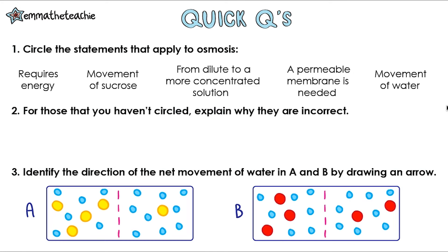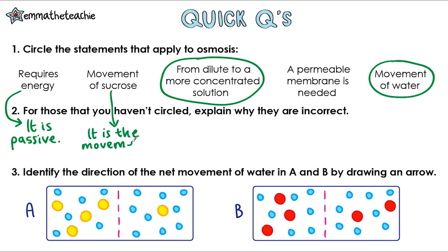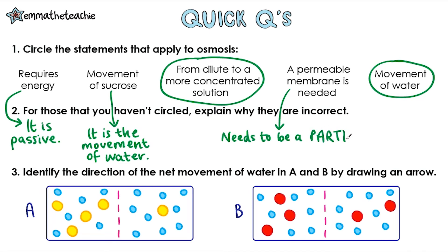Now it's time for some quick questions. Pause the video, give these a go, and then press play when you're ready to go through the answers. Question one: circle the statements that apply to osmosis. The correct ones are 'from a dilute to a more concentrated solution' and 'movement of water.' The statement 'requires energy' is incorrect because osmosis is a passive process — it doesn't need energy to move down a concentration gradient. 'Movement of sucrose' is incorrect because it's the movement of water. And it's not a permeable membrane but a partially permeable membrane, because water needs to cross but solutes like sucrose cannot.